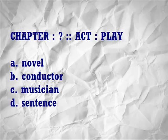Let's look at another. Chapter is to: A. Novel, B. Conductor, C. Musician, D. Sentence — as act is to play. A chapter and an act can be related as parts of larger works, but act and play are definitionally connected: an act is a division of a play. The word chapter is a noun, and in meaning-based analogies the parts of speech will be parallel. An act is a division of a play, just as a chapter is a division of what? Of our choices, only novel works, because a novel is divided into chapters.